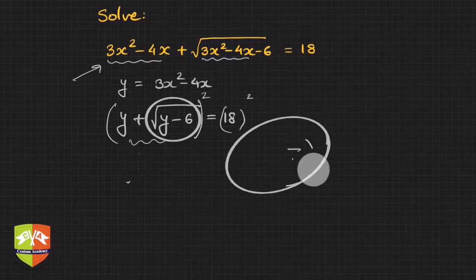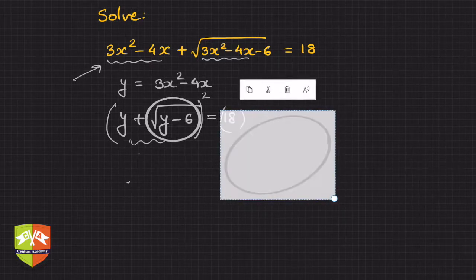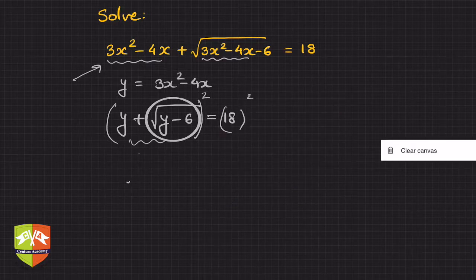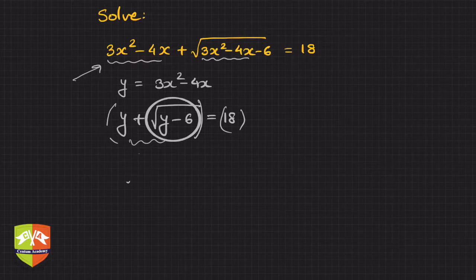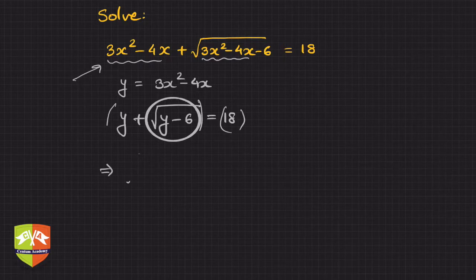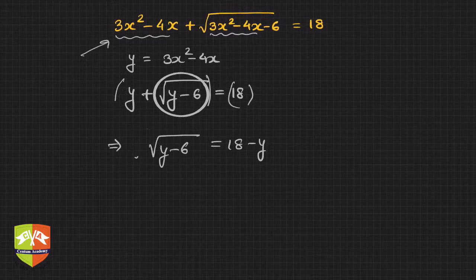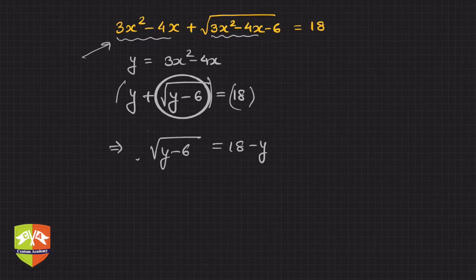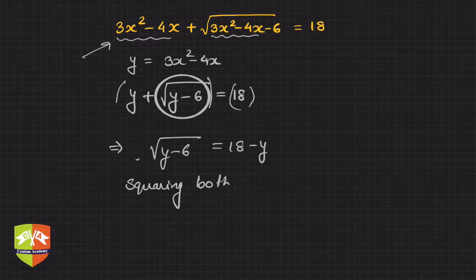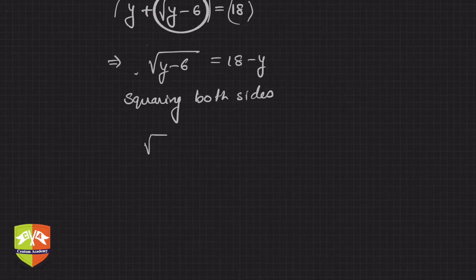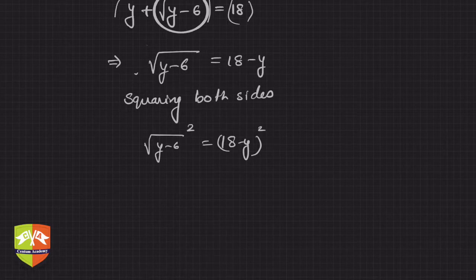The trick is simple: let the radical stay alone on one side. So we isolate √(y − 6) and write it as √(y − 6) = 18 − y. Now squaring both sides helps, because there is no 2ab cross term on the left-hand side. Squaring both sides gives: (y − 6) = (18 − y)².